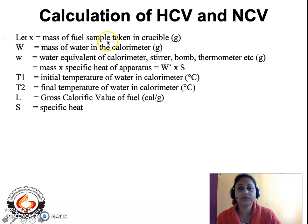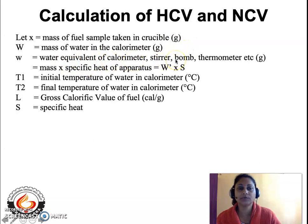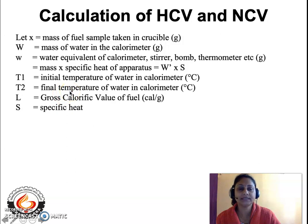Let x be the mass of fuel sample taken in the crucible, in grams. Let capital W be the weight of water placed inside the calorimeter. The water equivalent of the calorimeter — including the stirrer, bomb, thermometer, etc. — equals the mass of the apparatus multiplied by its specific heat S, denoted as W' × S. The rise in temperature ΔT equals the final temperature T2 minus the initial temperature T1, in degrees centigrade.